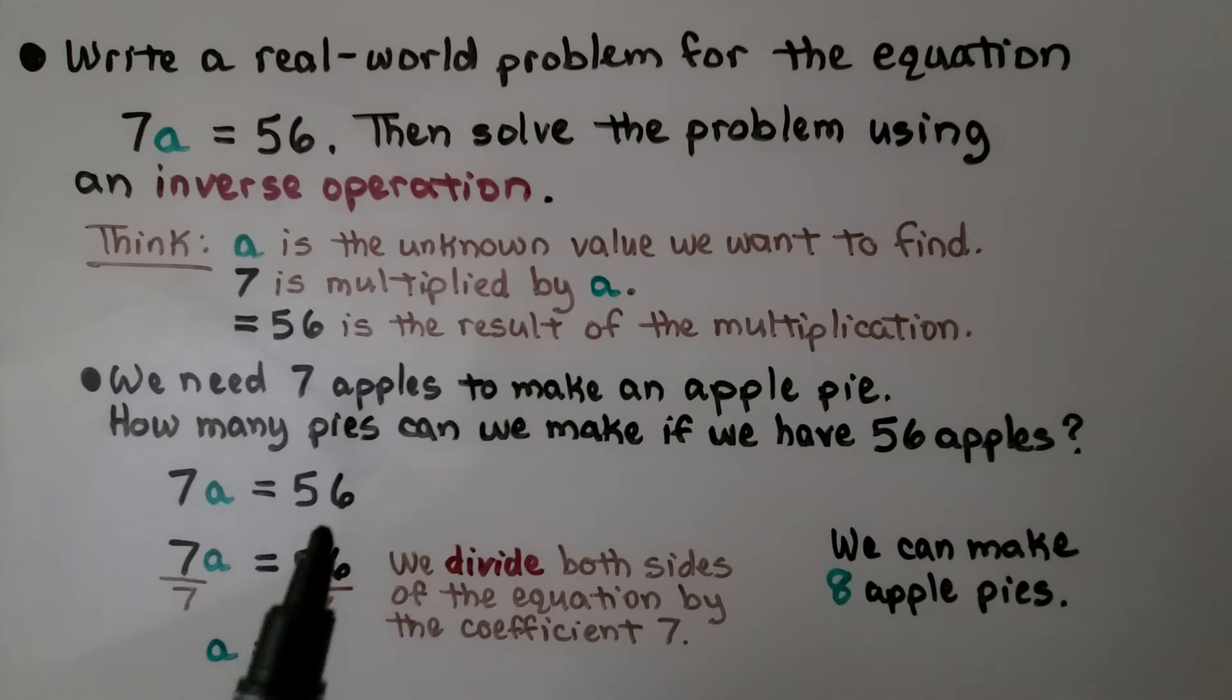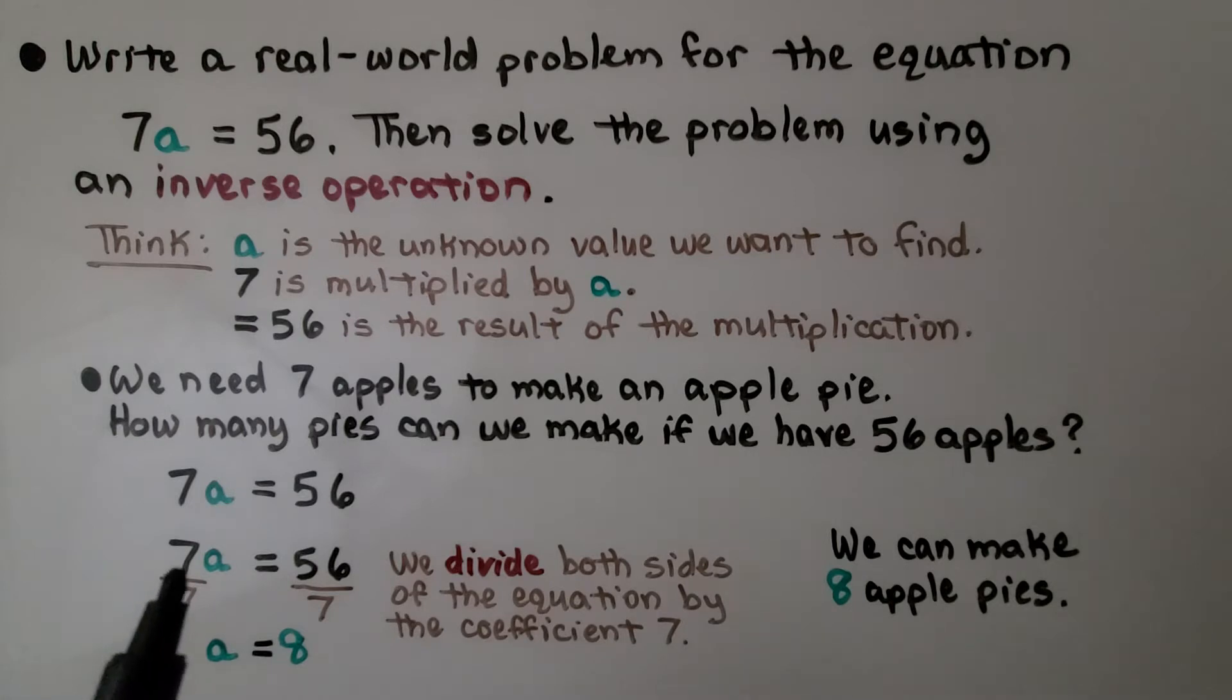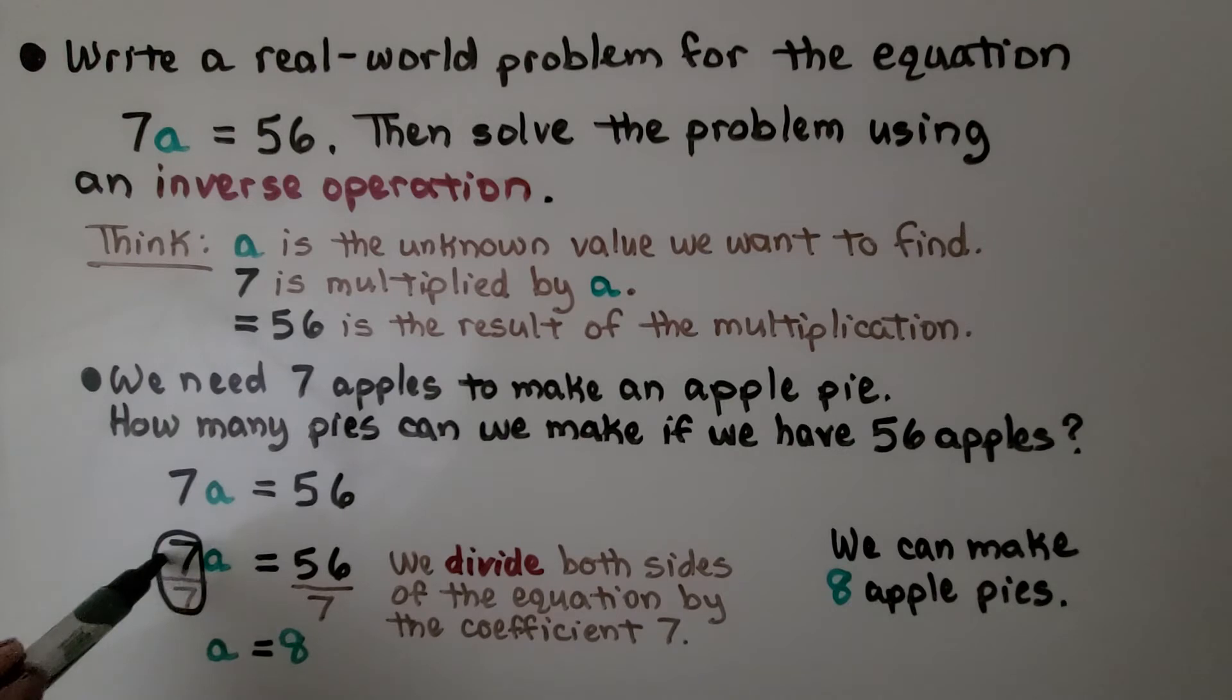7a equals 56. Because this is multiplication, the inverse operation would be division. We divide both sides of the equation by this coefficient 7. That's going to create a 1 because we have the same numerator and denominator.